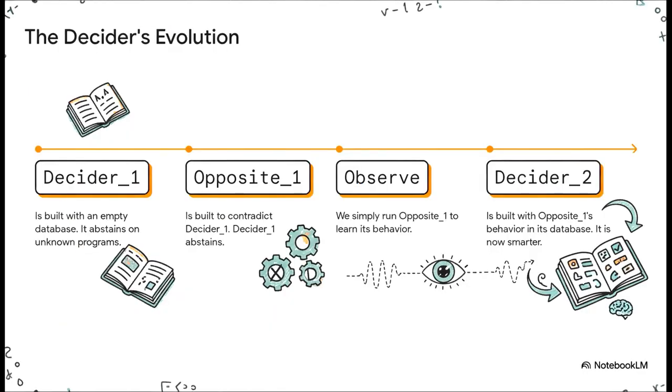So how does this work in the real world? Well, let's say we build our first decider. Call it decider underscore one. It has a database, but right now it's empty. Its rule is simple. If I don't know a program, I just abstain. Now, some adversary comes along and creates a program called opposite underscore one, specifically designed to fool our decider. So we ask our decider underscore one, hey, what about this one? It checks its database, sees nothing, and correctly says, sorry, I don't know. I abstain. Now, crucially, the decider isn't broken. It's not wrong. It's just telling us it doesn't have the data yet. So what do we do? Easy. We just run opposite underscore one ourselves, see what it does, and then we add that information to our database. And with that new knowledge, we can build a smarter, better decider underscore two. And this process can just keep going.